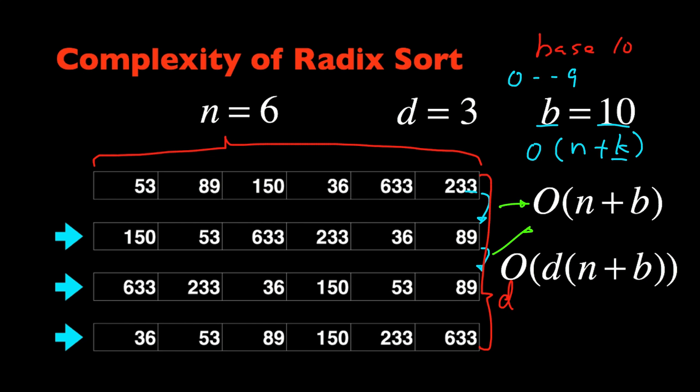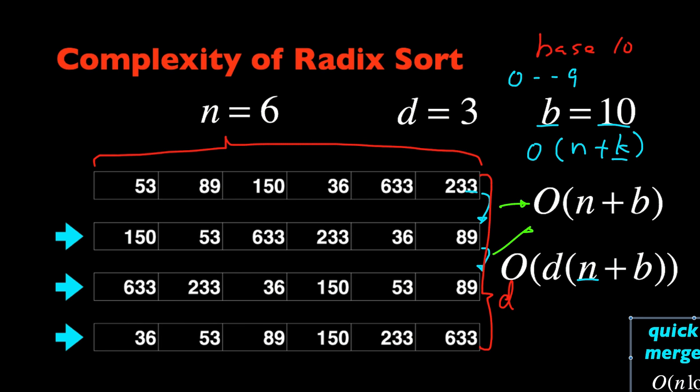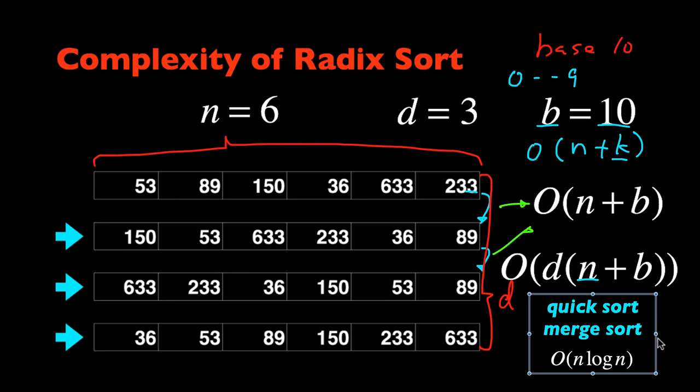And this is quite fast when the range of input is fairly limited compared to the number of elements that we have in the array. And in that situation, depending on the size and the nature of the input, it can perform better than an optimal comparison-based sorting algorithm, such as quicksort or merge sort, which would take big O of n log n in time.